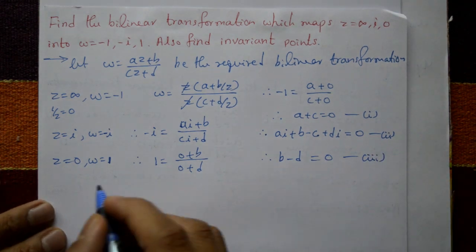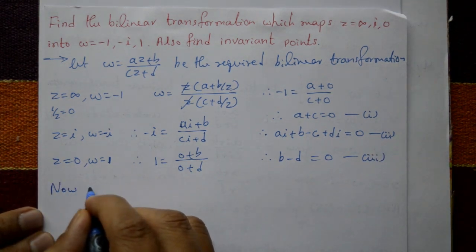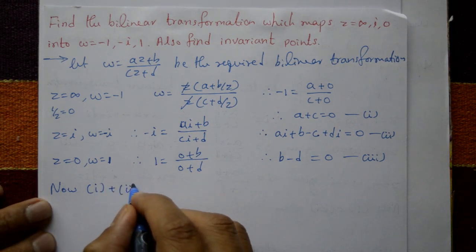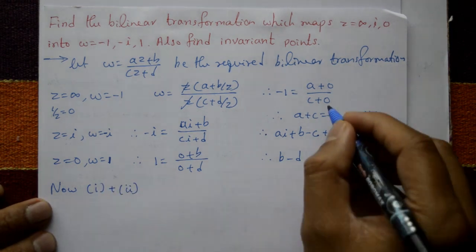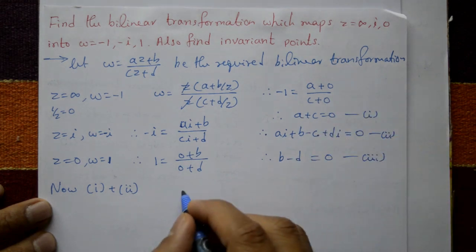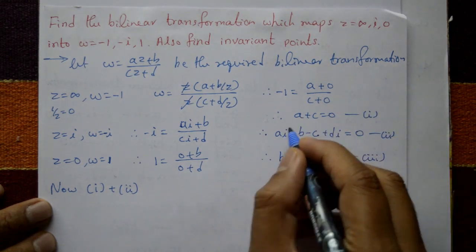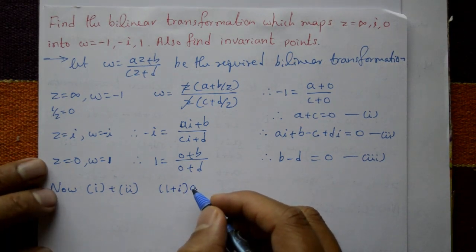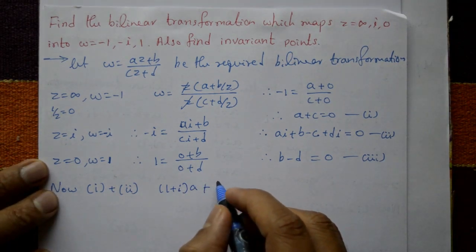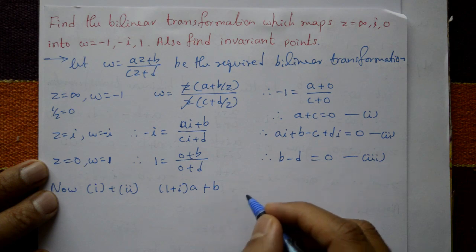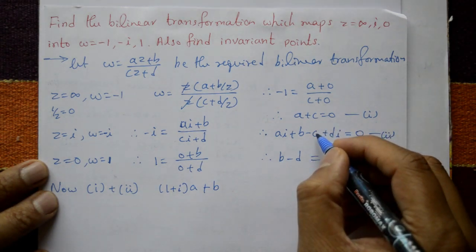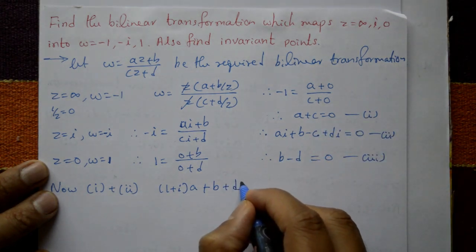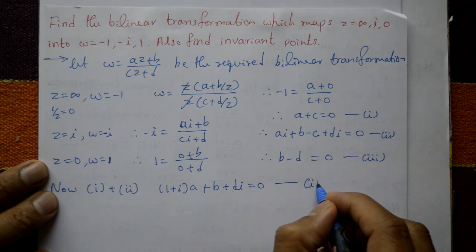Now adding equation number one and equation number two together. After combining, a is common giving (1 + i)a, plus b, and the c terms cancel, leaving plus di equal to 0. This is equation number four.